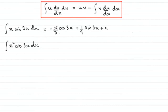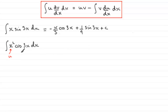For this next part, it says use our answer to part A to work out the integral of x squared cos(3x) with respect to x. We've got integration by parts here, and so what I'm going to nominate is x squared as u, and cos(3x) as dv/dx.